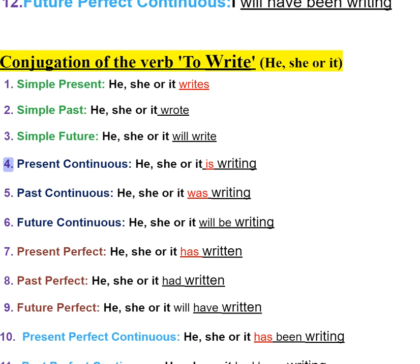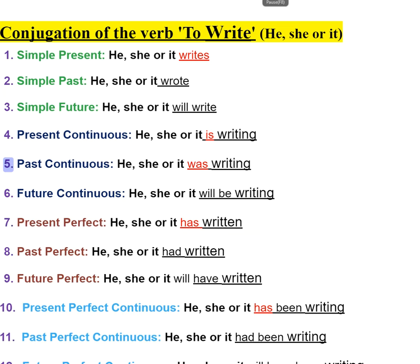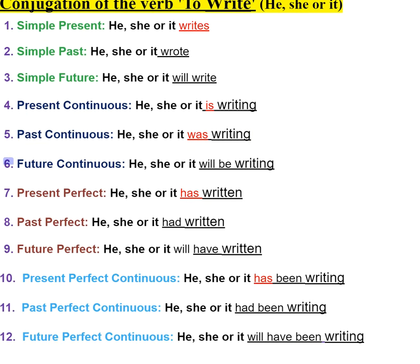Four: present continuous — he, she, or it is writing. Five: past continuous — he, she, or it was writing. Six: future continuous — he, she, or it will be writing.